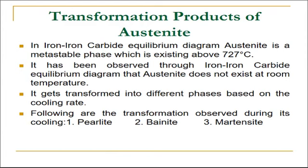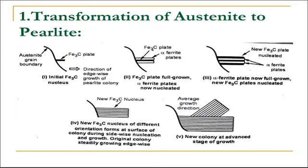Let us start with the fundamentals of heat treatment process. We will begin with the transformation products of austenite. We know that in the iron-iron carbide equilibrium diagram, austenite is a metastable phase which exists above 727°C. Austenite does not exist at room temperature conditions; it gets transformed into different phases based on the cooling rate. The transformations observed during cooling of austenite are: pearlite, bainite, and martensite.